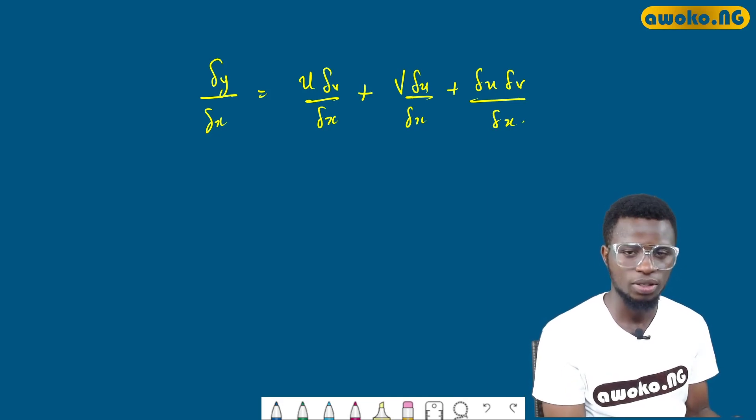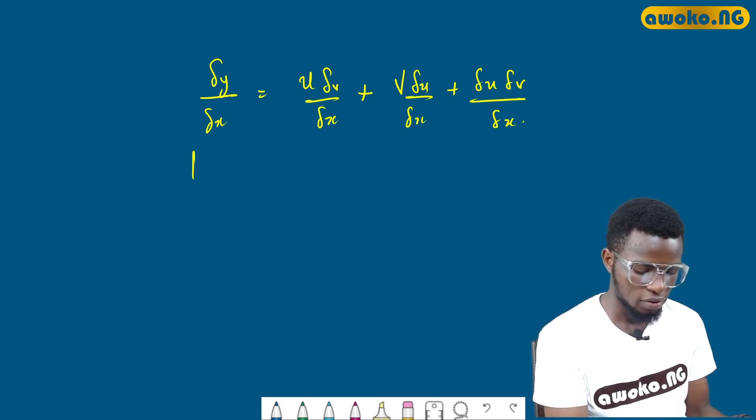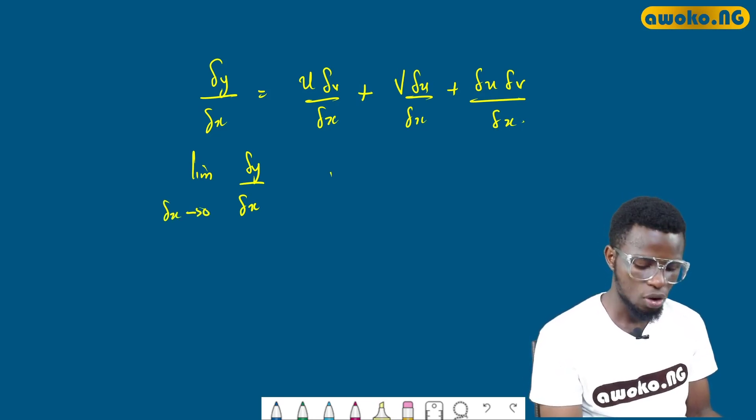Now if we do this, our next step from the first principle is to find the limit of the left hand side. So we have limit dy/dx as dx tends to zero.